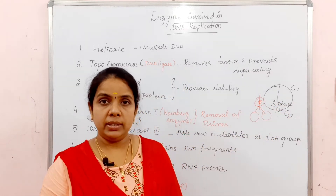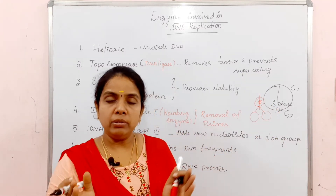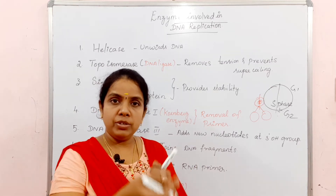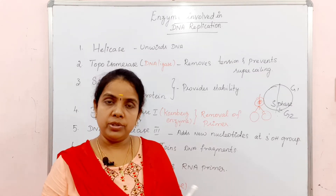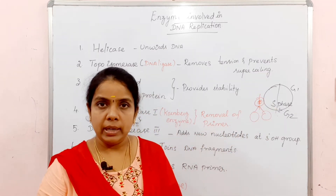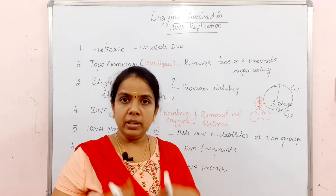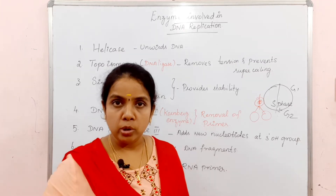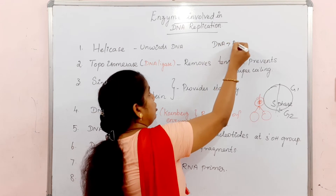In the S phase, the DNA is replicating. The cells mature, then the cell divides during the M phase into two cells. So replication occurs in the S phase. DNA is an auto-catalyst - it replicates itself. What is DNA? It is an auto-catalyst.